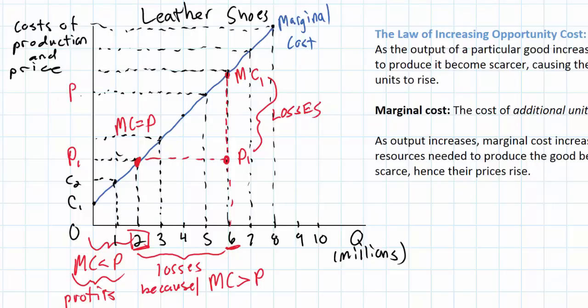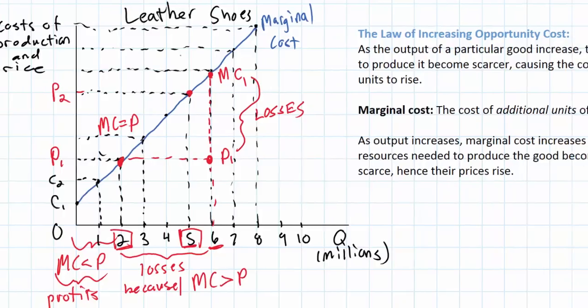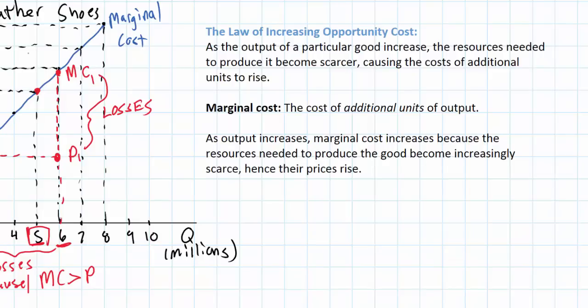If the price of shoes that consumers are willing to pay was P2, firms would not be willing to make any more than 5 million pairs of shoes, because beyond 5 million pairs of shoes the marginal cost would be greater than the price and the firms would be losing money. Keep in mind, firms are profit seekers. It is never in a business's interest to produce a good if the marginal cost — in other words, the cost of the last unit produced — exceeded the price. So the relationship between marginal cost and supply follows directly from this logic.